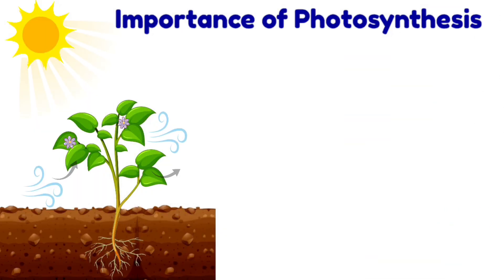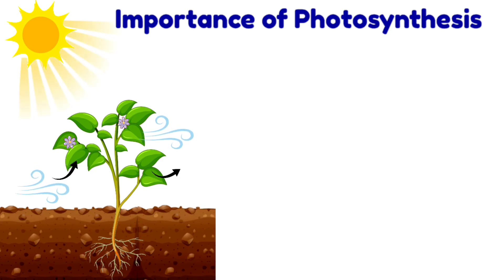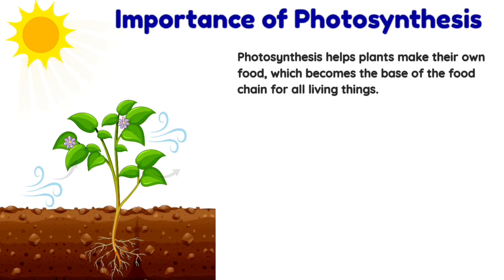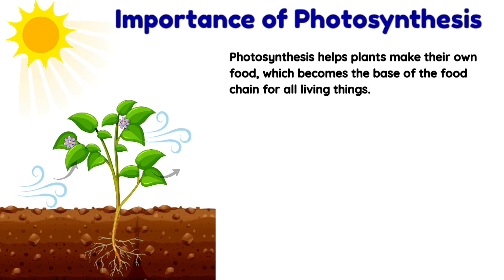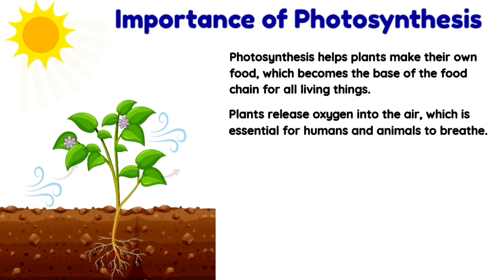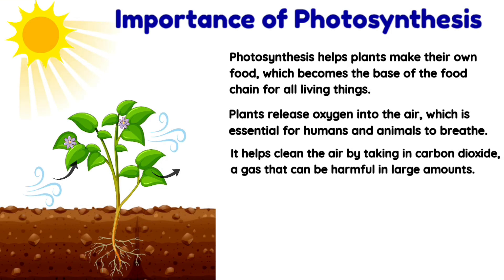Photosynthesis is really important for plants, and it is just as important for humans as well. Photosynthesis helps plants make their own food, which becomes the base of the food chain for all living things. Plants also release oxygen into the air, which is essential for humans and animals to breathe.